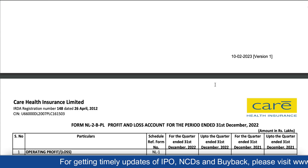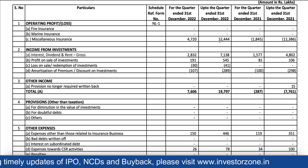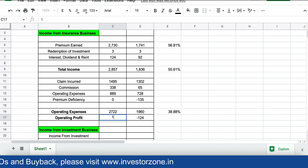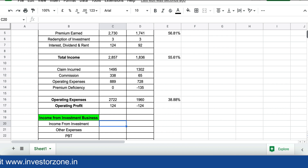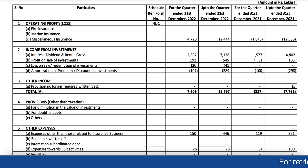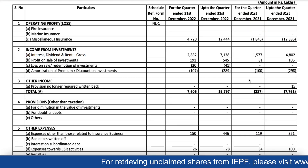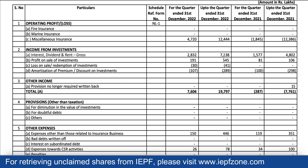The income from the insurance business this year is around 124 crores compared to negative last year. Looking at the investment business: income from interest, dividend, and rent was 48 crores last year and 71 crores this year. There was also some profit on sale of investments — 1 crore last year and 5 crores this year.